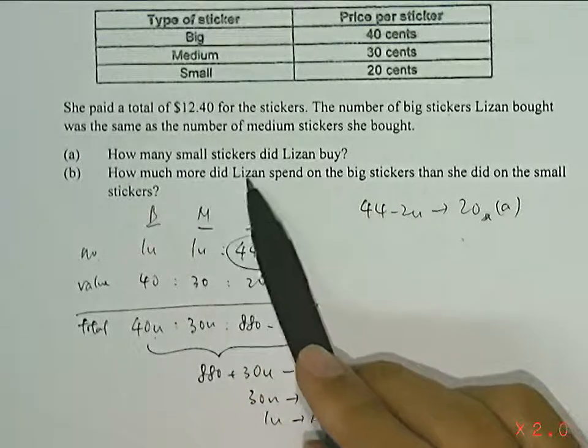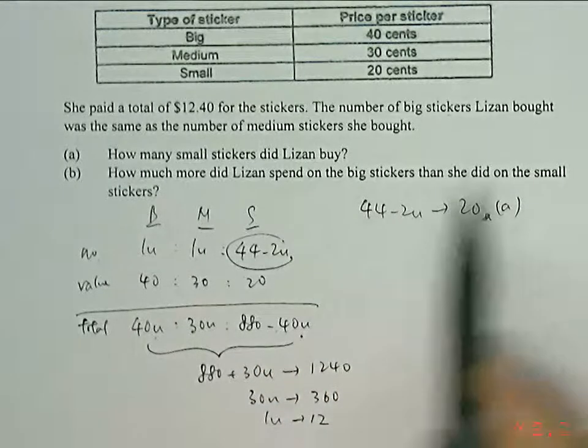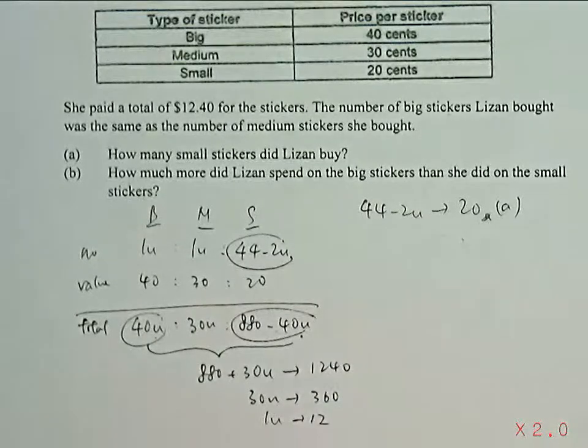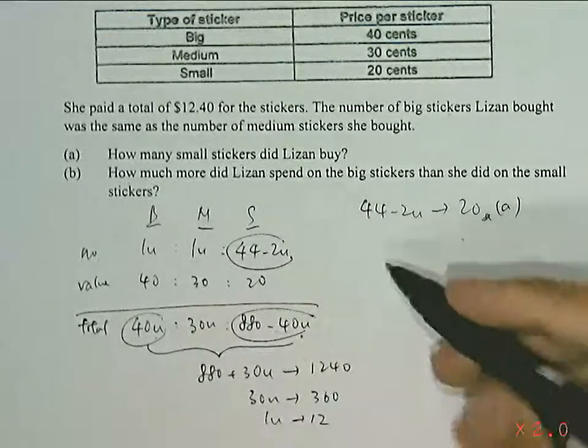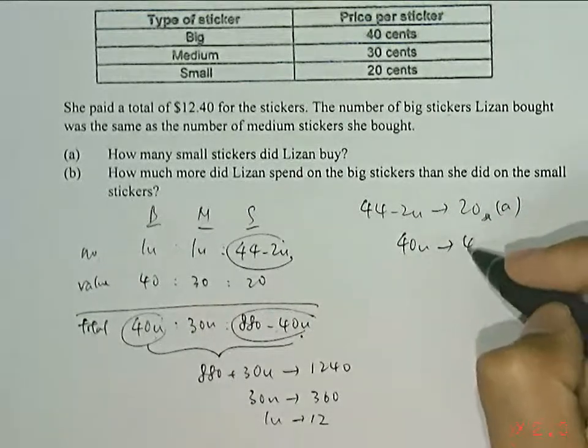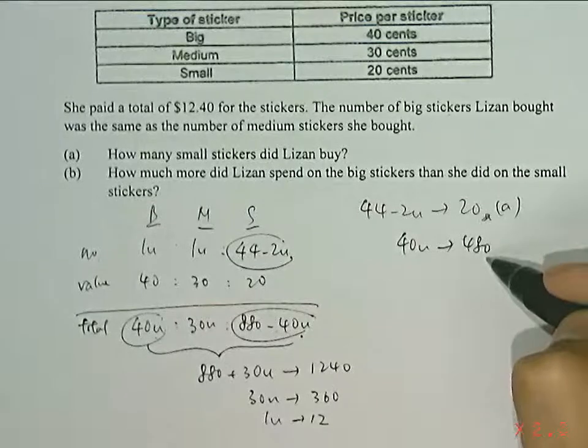Part B: how much more did Lizan spend on the big stickers than she did on the small stickers? So the big stickers, she spent 40 units. The small stickers, she spent 880 minus 40 units. So 40 units would be 12 times 40, which is 480 cents.